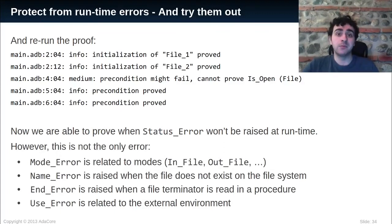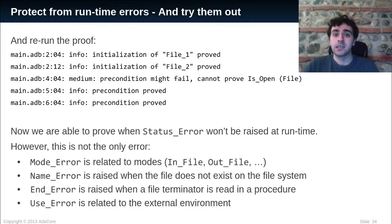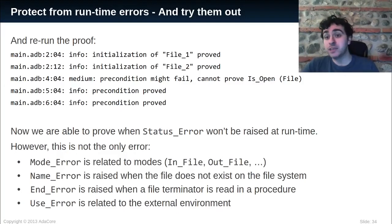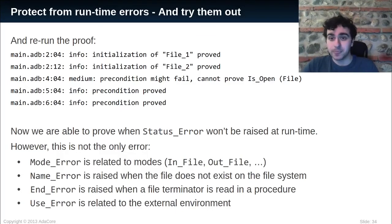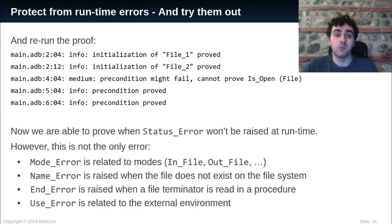This is not the only error that can be propagated by subprograms from Ada.Text.IO. There are plenty of others. Mode_Error is related to the mode in which files are open: In_File is read mode, Out_File is write mode. Mode_Error can be propagated when we try to read characters from a file open in write mode, for example. We handle this error in preconditions as well as Status_Error. There are other errors such as Name_Error, raised when the file does not exist on the file system, or End_Error raised when a file terminator is read. Use_Error is related to the external environment. We could not add preconditions protecting from these errors since it was not possible to express them with Spark contracts.